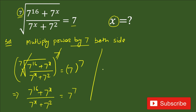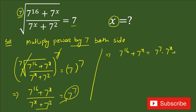In the next step we cross multiply. So we write: 7 power 16 plus 7 power x equals 7 power 7 multiplied by (7 power x plus 7 squared), which expands to 7 power 7 times 7 power x, plus 7 power 7 times 7 squared.